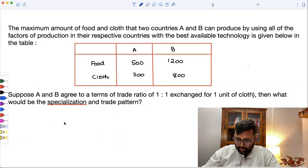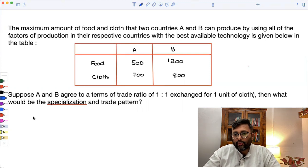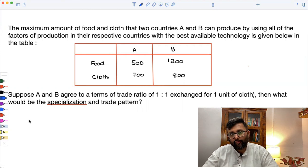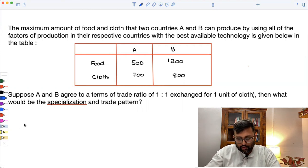So I need to find out the opportunity costs. If I have the lower opportunity cost in cloth, I'll be producing cloth and then exporting cloth, and I'll be importing food. Similarly for you. So let me just find this out. I need to find out the output table first.